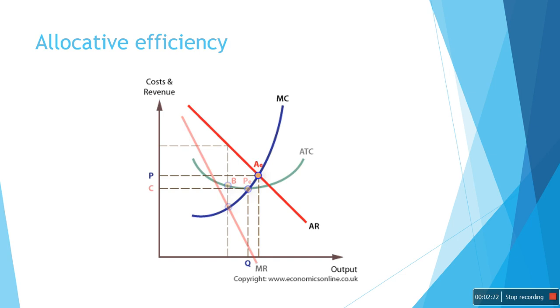When average revenue intersects with marginal cost, just to be reminded that price is equal to marginal cost supply. When the marginal cost and the average revenue intersect, it's called allocative efficiency.